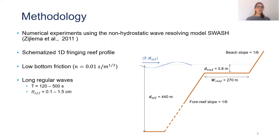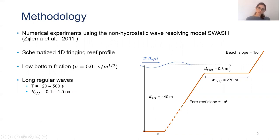We also use a small wave amplitude between 0.1 and 1.5 centimeters. We use a small wave amplitude because in order to use SWASH, you need to have linear wave conditions at the wave maker, which is here, and that's why we also needed to extend our reef until 440 meters.